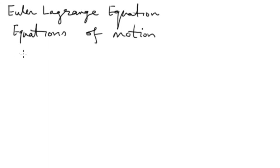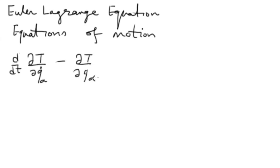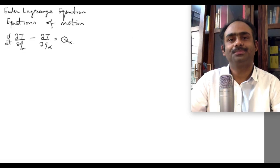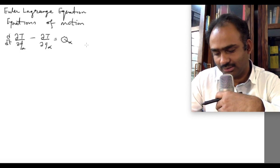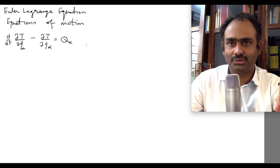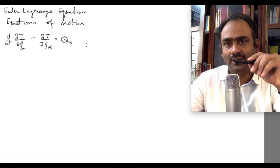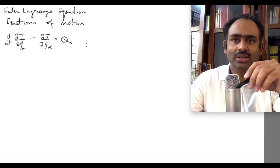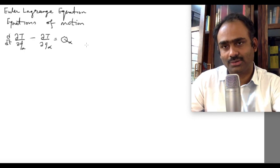Last time we wrote down the Euler-Lagrange equation and we will take up from there today. The equation was: d/dt of ∂T/∂q̇_alpha minus ∂T/∂q_alpha equals Q_alpha, where T is the total kinetic energy of the system — the sum of kinetic energies of each individual particle. Because derivatives with respect to q_alpha and q̇_alpha are involved, T must be expressed in terms of generalized coordinates, not Cartesian coordinates.